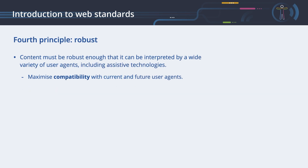Fourth principle: Robust. Content must be robust enough that it can be interpreted by a wide variety of user agents, including assistive technologies. The guideline for this principle is to maximize compatibility with current and future user agents. In general, this guideline is asking for error-free coding so that the code can be parsed. Beyond that, the HTML elements should be applied correctly. We will see many examples of this in the following chapters.